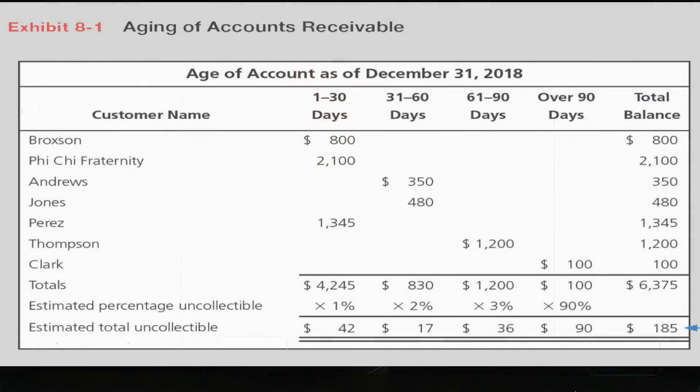Okay, so you can see now in the table, it shows us the amounts owed by the customers. For example, between one day to 30 days, we have $800 owed by Braxton. And then there's another company that owes us $2,100 between one to 30 days also.